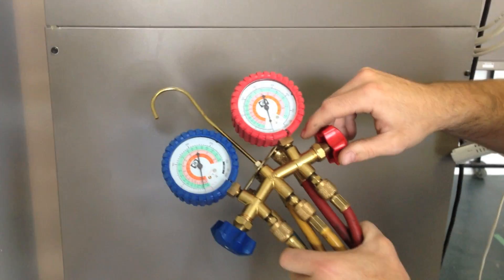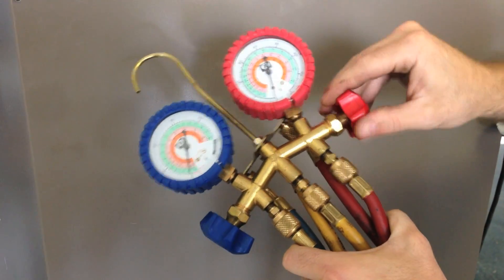Our gauge set. So the first thing we want to do is make sure that our valves are in the closed position.